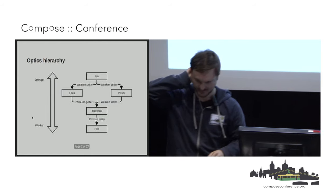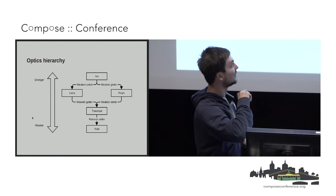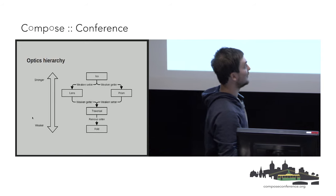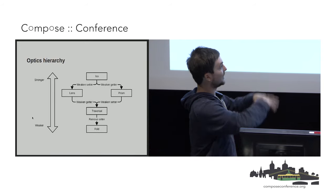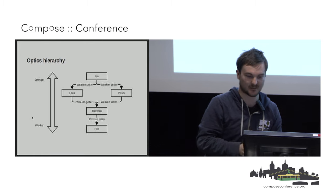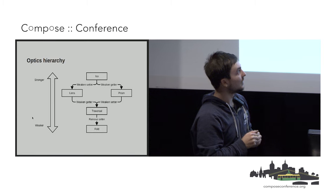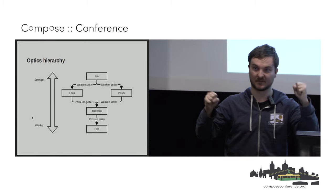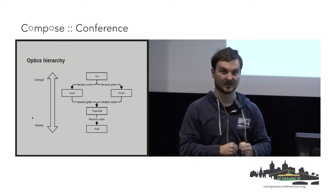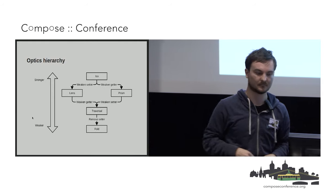These all compose together and you get different types based on what you compose. There's a hierarchy that comes out of that. If you take an ISO — which is like the strongest claim you can make about two types — and you weaken parts of it, you get to different types of optics. You can weaken more parts of it and get to yet different types of optics.